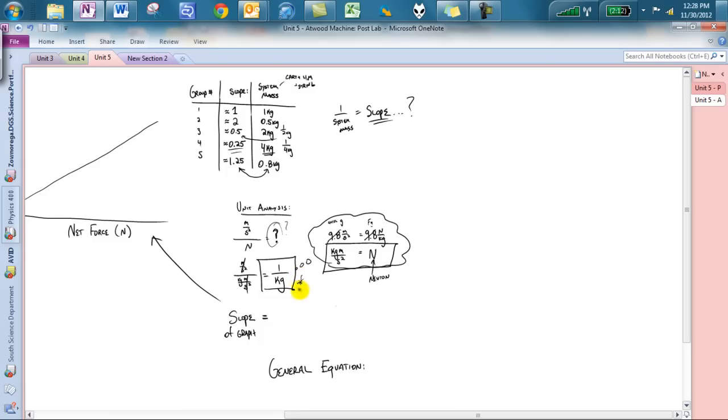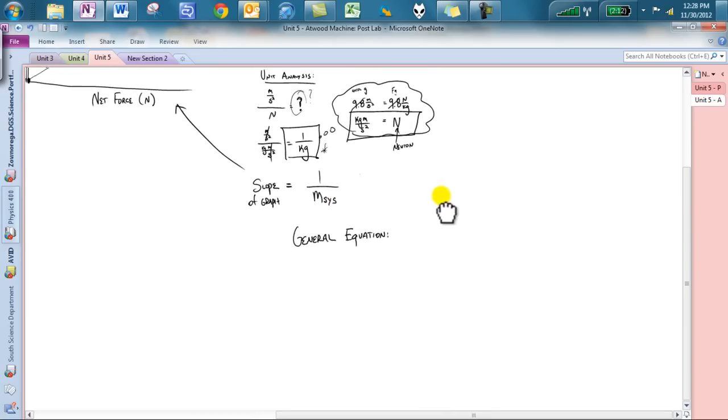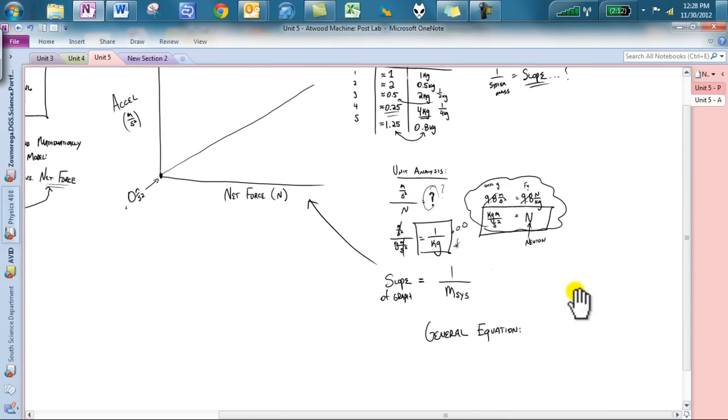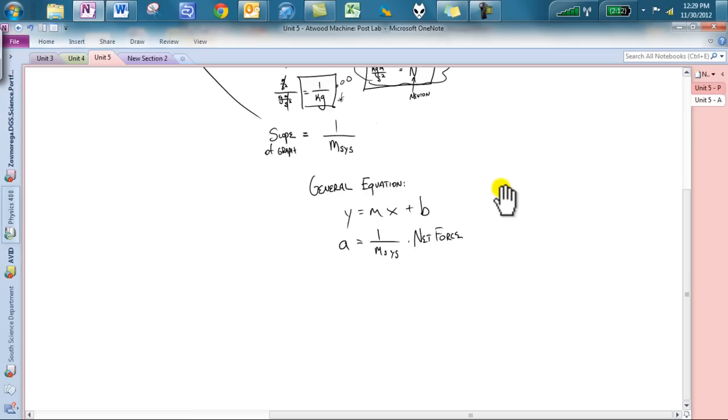We said the slope is one over the system mass. Our unit is one over kilograms, so we realize the slope of the graph equals one over, and we can represent it by m_sys, which is mass of the system. So, what is so cool about this, this is the main idea of this whole entire lab, if we look at our general equation, which is equal to y equals mx plus b, our y is acceleration, our m is one over the system mass, and our x is our net force. So, the equation that we get in this situation, if I write this out, is a equals net force over mass of the system.